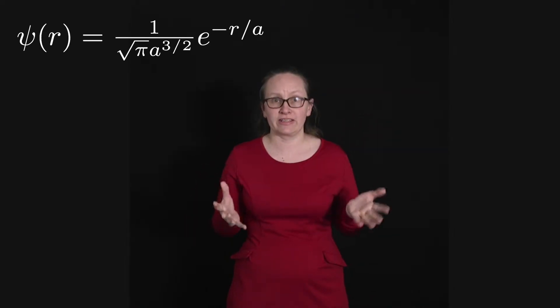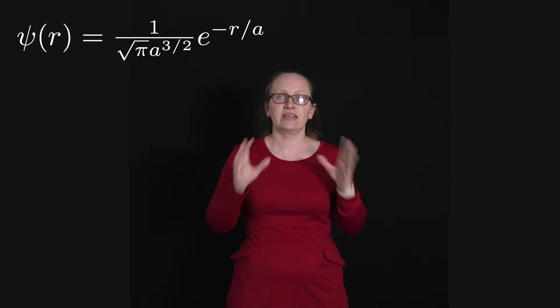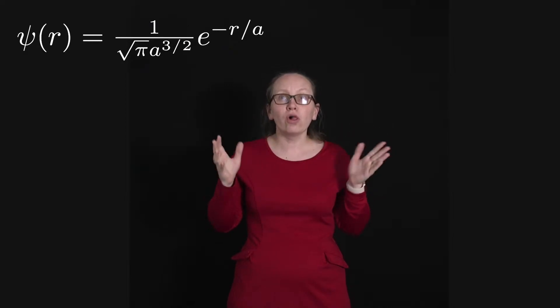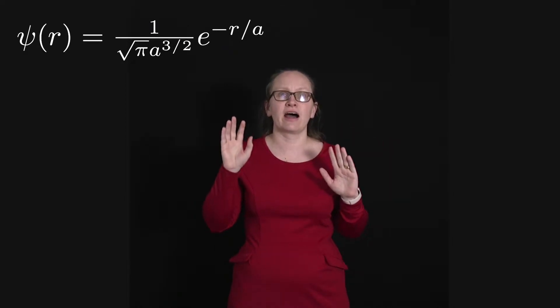We can use Schrodinger's equation to show that the wave function for a ground state electron is given by psi of r equals 1 over the square root of pi times a to the 3/2, all times e to the minus r over a.